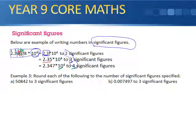The next one says: Example 3, round each of the following to the number of significant figures specified. We want three, so we're going to go one, two, and there's our third one: 508. So we're going to have 5.08—that's three significant figures—and we've gone one, two, three, four times, so 10 to the power of 4.